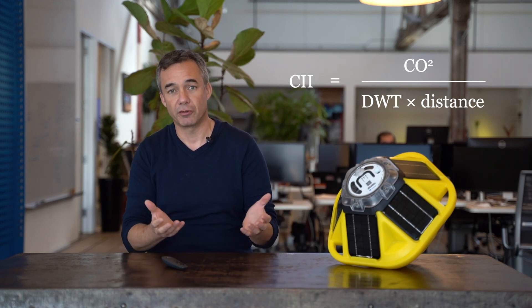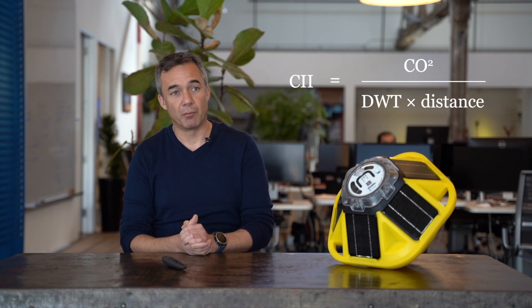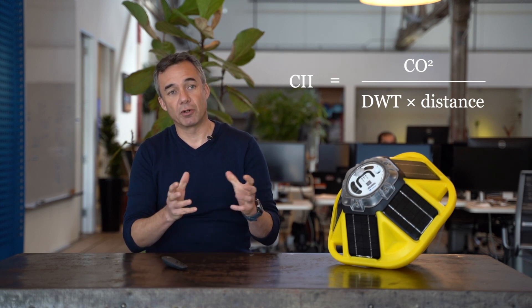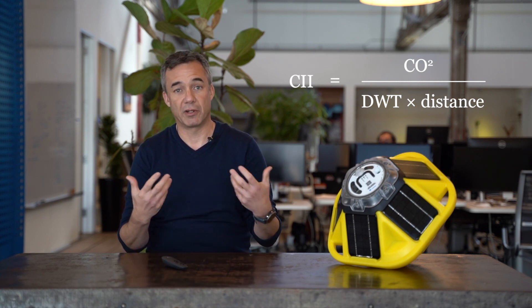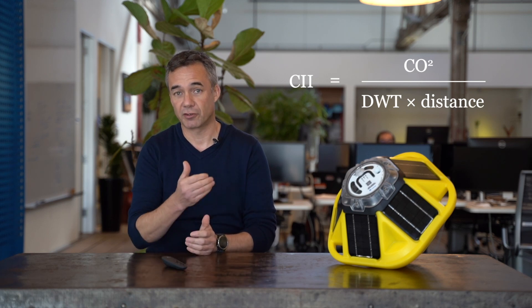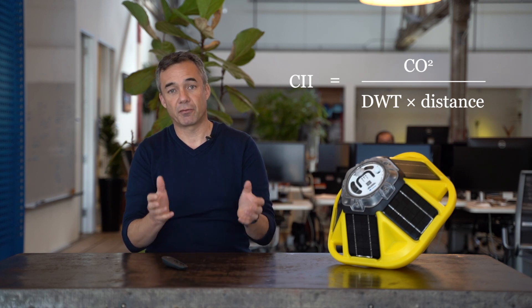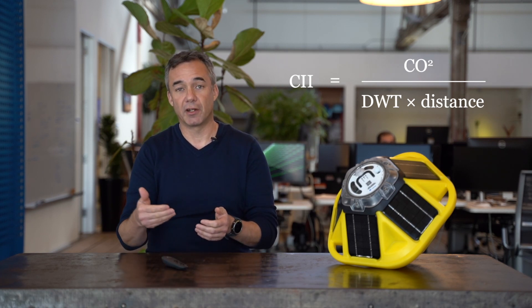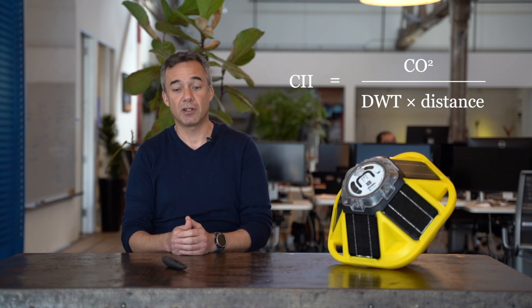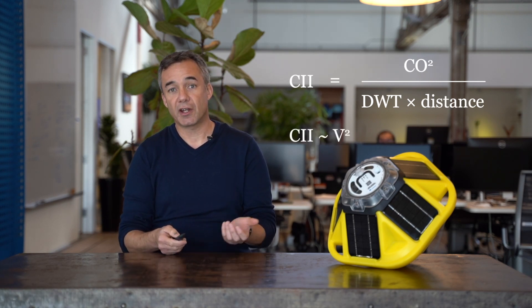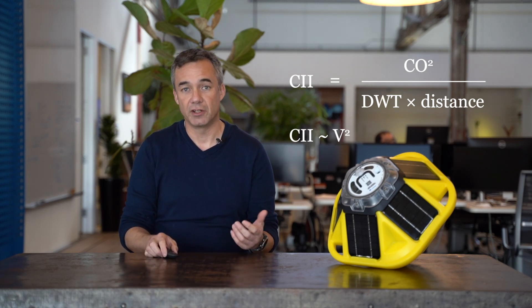That means that if you're moving or not, it makes a big difference. If you're sitting in port, your distance is going to be zero, so your denominator is going to be zero — so speed matters. CO2 emissions scale with fuel consumption, which scales as speed cubed. Distance is time spent at sea multiplied by speed, so that is V. V cubed over V means the CII metric scales as V squared.